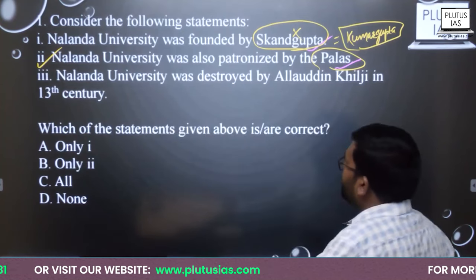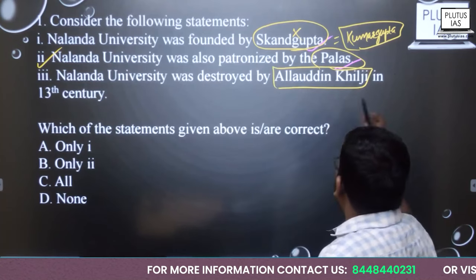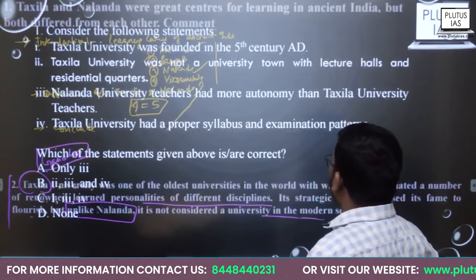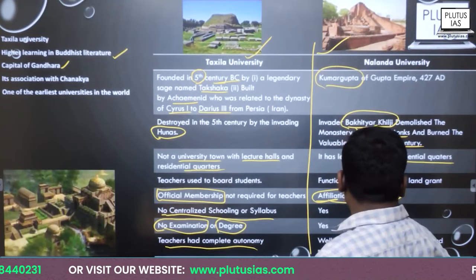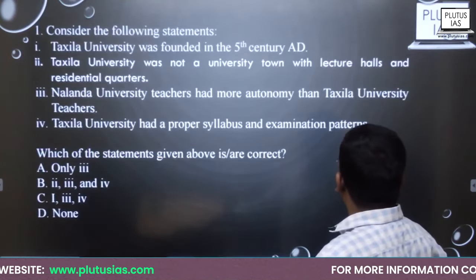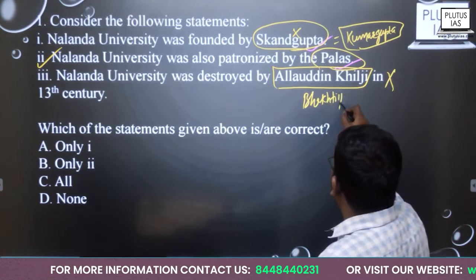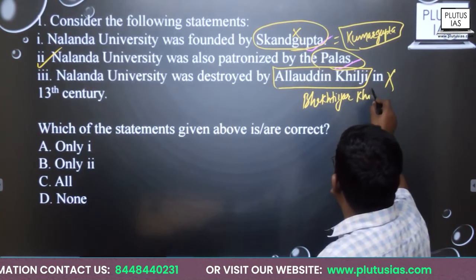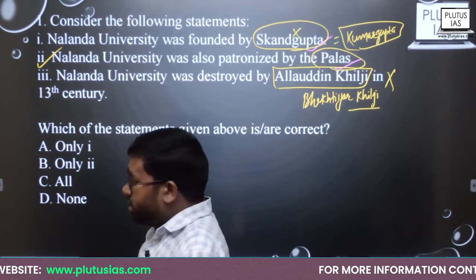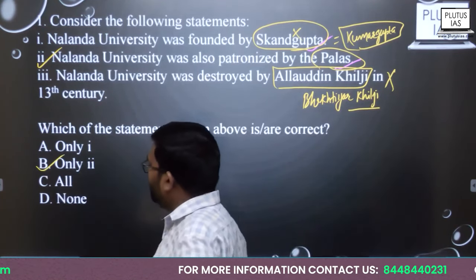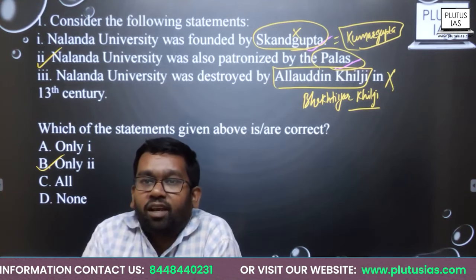The third statement says Nalanda University was destroyed by Alauddin Khilji — this statement will be false. It was destroyed by Bakhtiyar Khilji, so this statement is wrong. Therefore, only statement 2 is correct in this question, and only option B will be the answer. So how did you do? Did you answer all correctly?